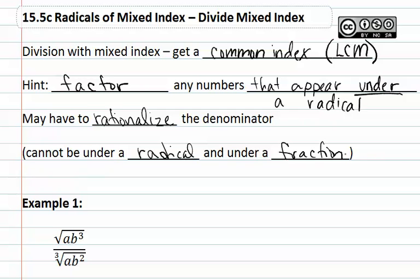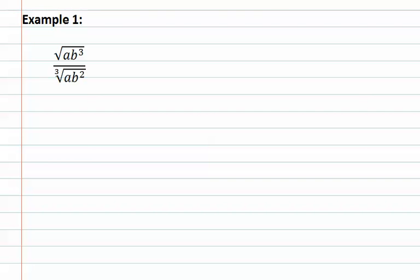Meaning the radical cannot be in the denominator. Let's look at how this applies in example one. There's no index written in the numerator. This is because if no index is written, it is implied that it is a 2, or a square root. Now we must find the least common multiple of the two indexes. This would be 6, meaning the numerator needs to be multiplied by 3, and the denominator needs to be multiplied by 2.